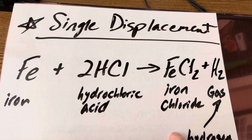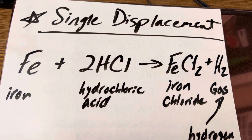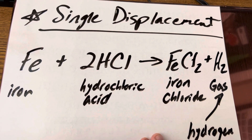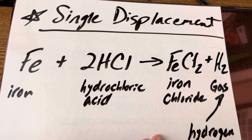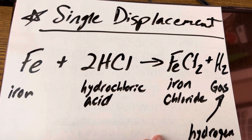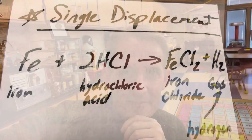Interestingly, iron chloride is used for a number of things. It's used to purify water, it's used in sewage treatment plants, and all kinds of industrial purposes. I hope you enjoyed this edition of Ramseyland, and I'll see you next time.